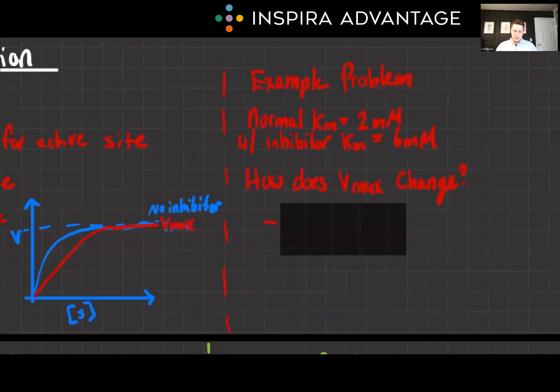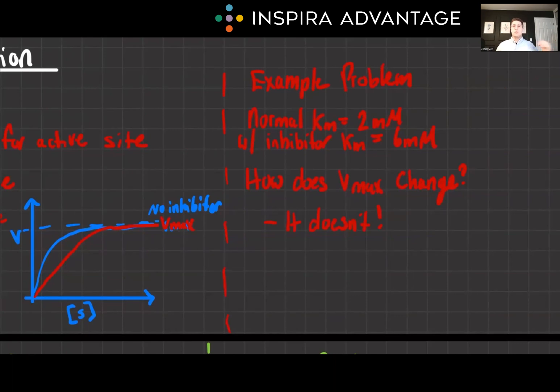Let's try a quick example problem. Consider an enzyme with a normal KM of 2 millimolar. When a competitive inhibitor is present, the KM increases to 6 millimolar. What happens to VMAX in this case? Well, VMAX will remain unchanged. We said it won't move, so VMAX stays exactly where it was.